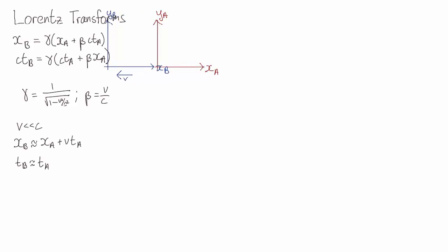So in other words, to transform the other way, we go through the exact same derivation and end up with the exact same equations, just with v swapped with minus v, or in this case, beta swapped with minus beta.